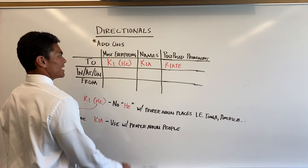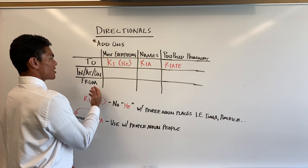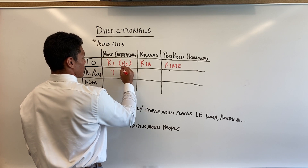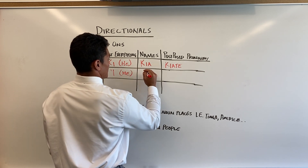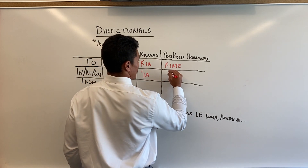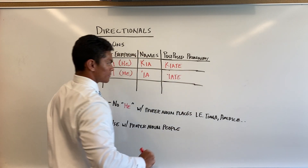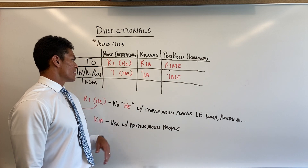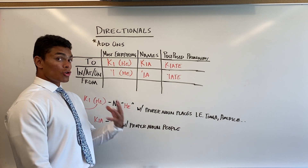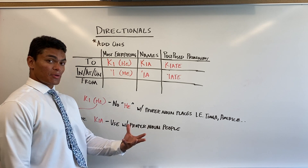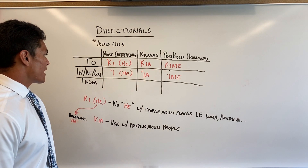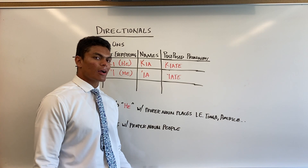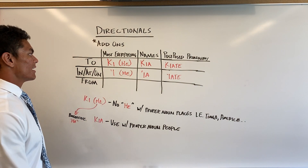Now that we understand how to use 'to,' it's going to make it really easy to understand how to use 'in,' 'at,' 'on,' and 'from,' because they follow the exact same pattern. For 'in/at/on' we're going to have i-he, i-a, and i-ate. For example: 'I am sitting on the chair.' 'I live in Tonga' — because Tonga is a proper place, remember. 'I am standing on the floor' — 'ko tu'u i-he fasi'ika.' That's how we use that.